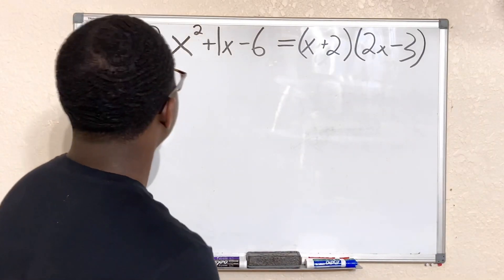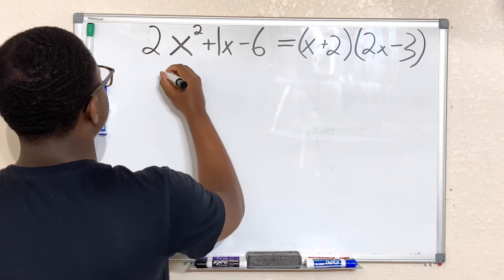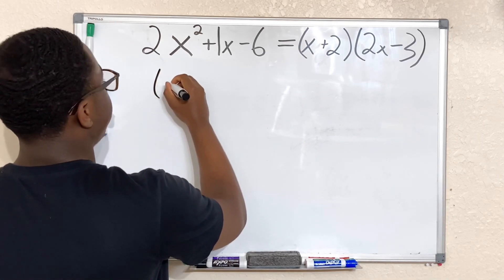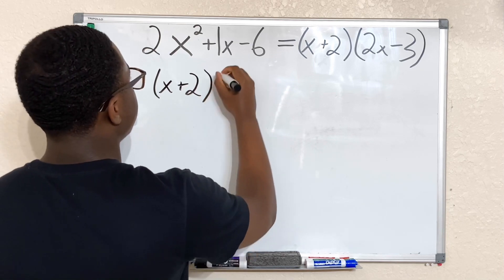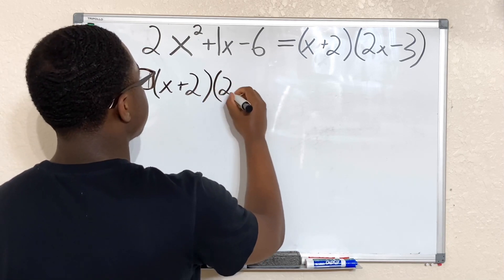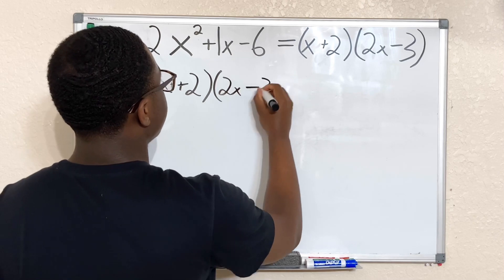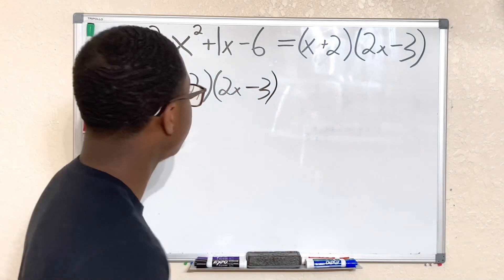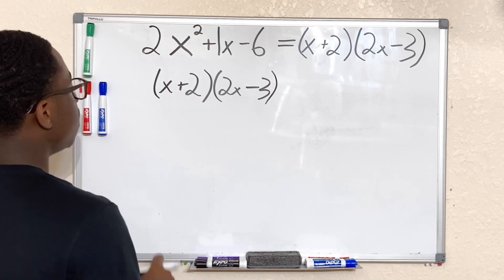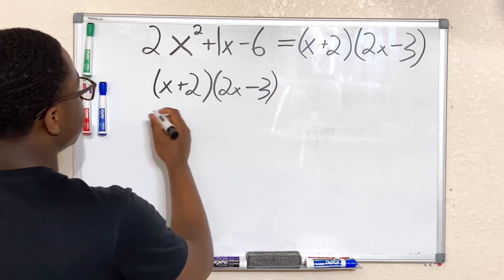So here we have x plus 2 and then 2x minus 3. Now I won't be teaching on how to FOIL. If you need help with FOILing, remember the video is in the description.